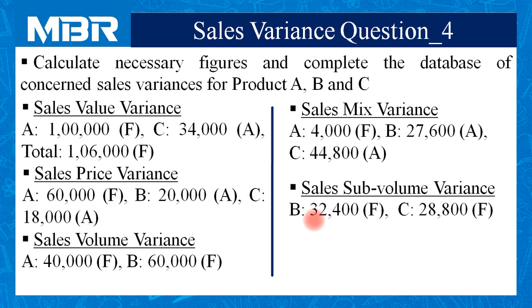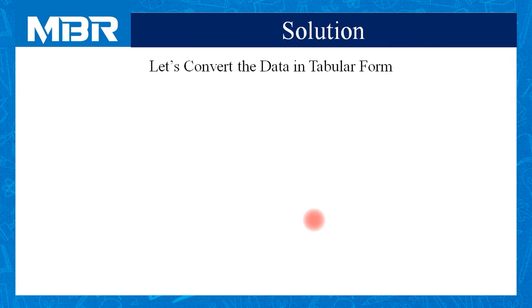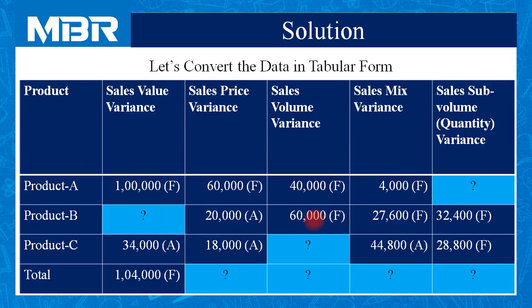The examiner has given information in a miscellaneous form. To complete the database, we will prepare a table and arrange the information in tabular format so we can identify which items are given and which are missing. Missing items are: sales value variance for product B, total sales price variance, sales volume variance for product C, total sales mix variance, and sales sub-volume or quantity variance for product A as well as the total.